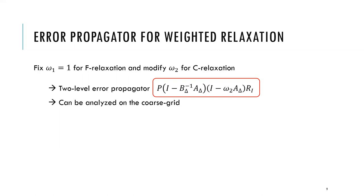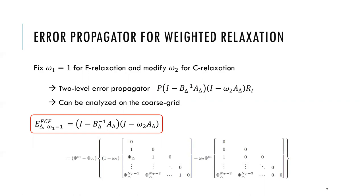From a new convergence analysis we conducted, the two-level error propagator for weighted relaxation is defined as the expression in the red box. Capital P is an interpolation operator; one application of P yields the exact solution at F points, leaving the residual equal to zero at these points. Capital R_i is a restriction operator that maps to C points. This error propagator can be analyzed on the coarse grid, and it becomes the expression in the red box.